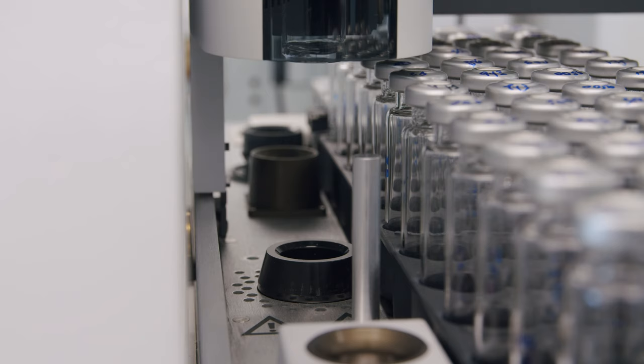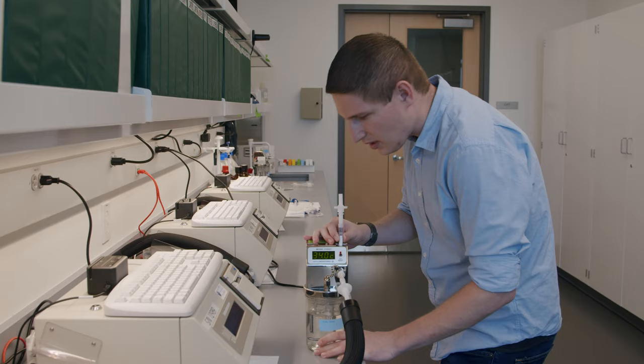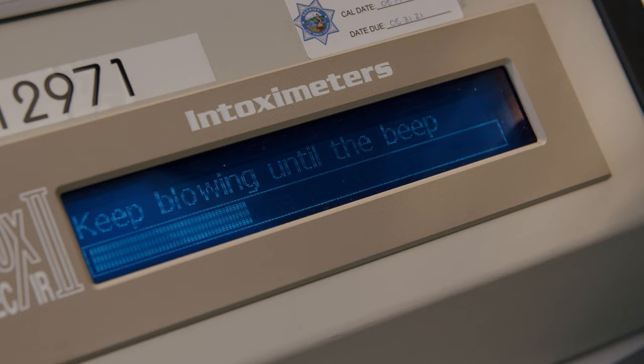Right now, we're in the breath alcohol room, and this is the room where we calibrate and maintain breath alcohol instruments that are used in the county. When a person blows into the breath alcohol instrument, there are two components at work. The first is the infrared detector, which monitors the quality of the sample that's being provided to the instrument. Secondly, a small portion of that person's air enters the electrochemical fuel cell, where the alcohol in the person's breath reacts with a catalyst inside the instrument to produce an electrical current. And that electrical current is proportional to the amount of alcohol in the person's breath.